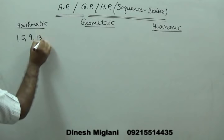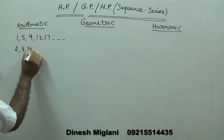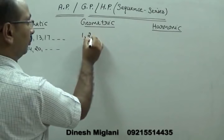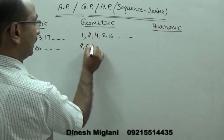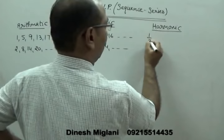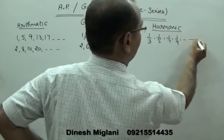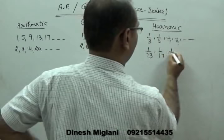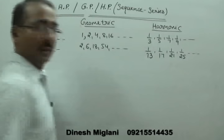Suppose I give the series: 1, 5, 9, 13, 17 and so on; and 2, 8, 14, 20 and so on — these are AP examples. Then: 1, 2, 4, 8, 16 and so on; and 2, 6, 18, 54 and so on — these are GP examples. And: 1/3, 1/5, 1/7, 1/9 and so on; and 1/13, 1/17, 1/21, 1/25 and so on — these are HP examples.